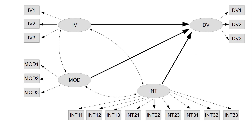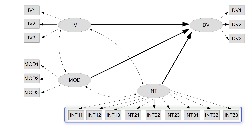In the end, we have centered interactions of centered indicators. This would be our model. Of course, this is a very simple model where we just run a latent interaction, but this could be part of a much larger model with additional variables. To understand the principles of running moderation analyses in full SEM, it's best to start with a very simple model.